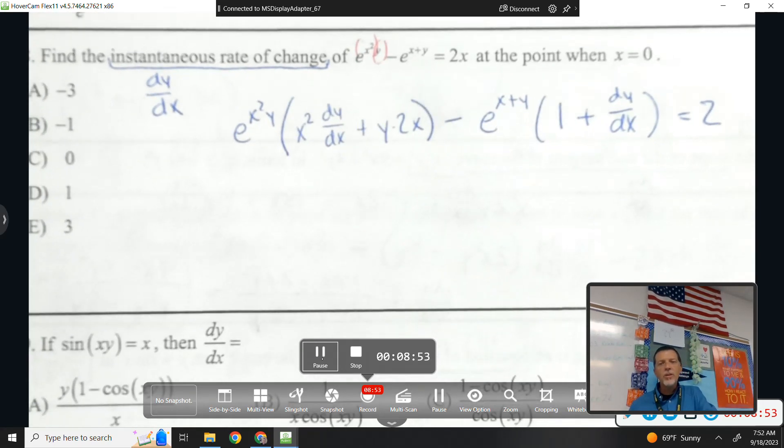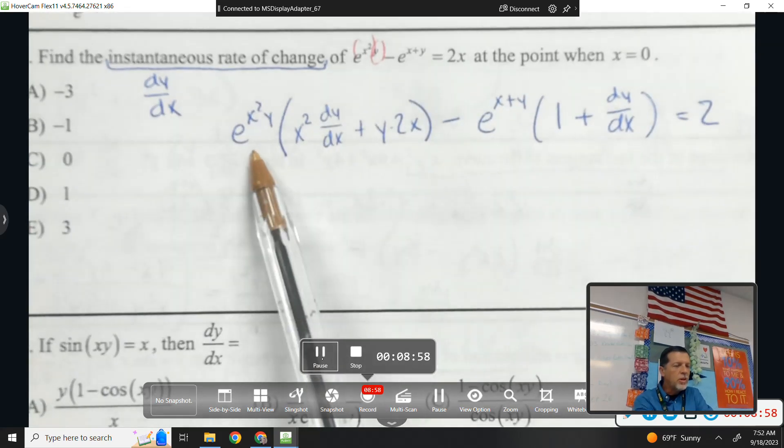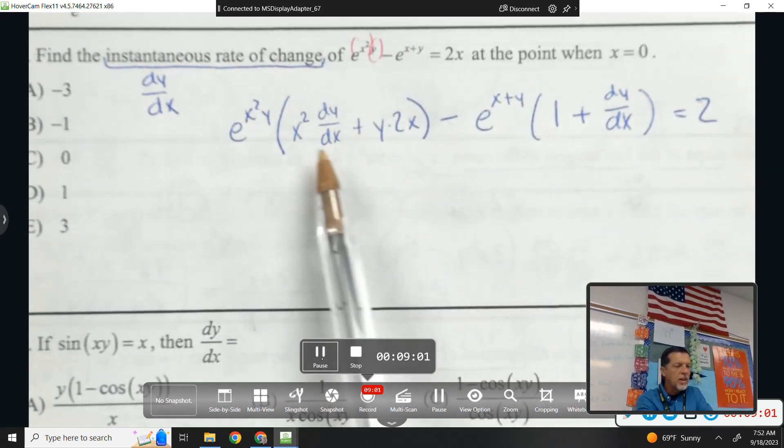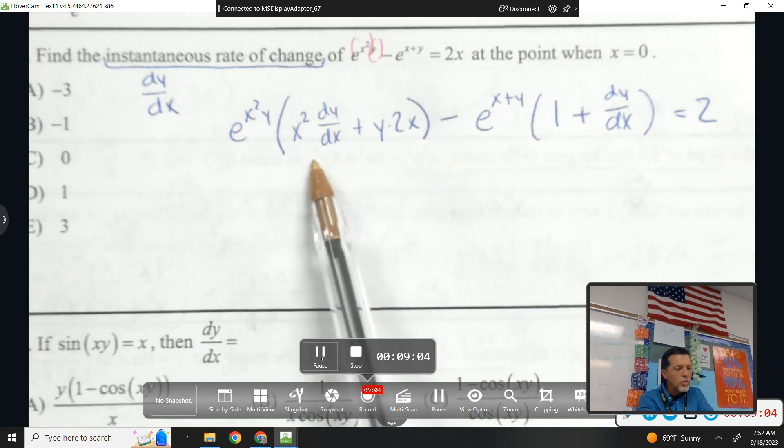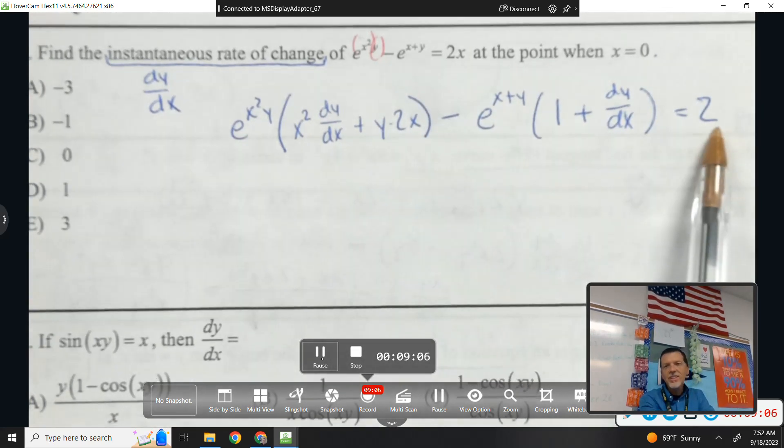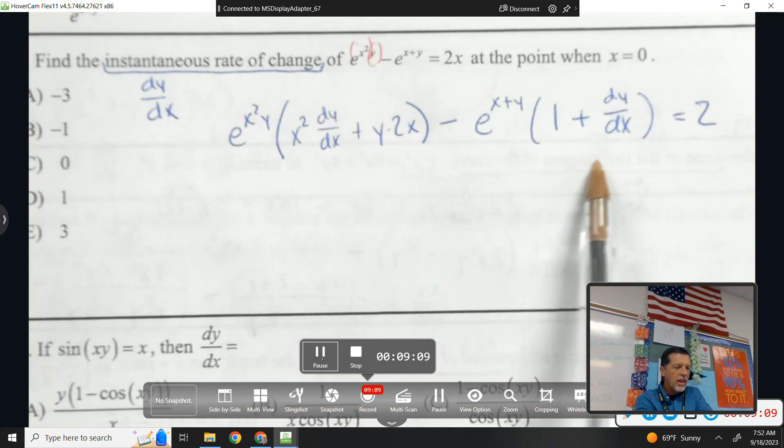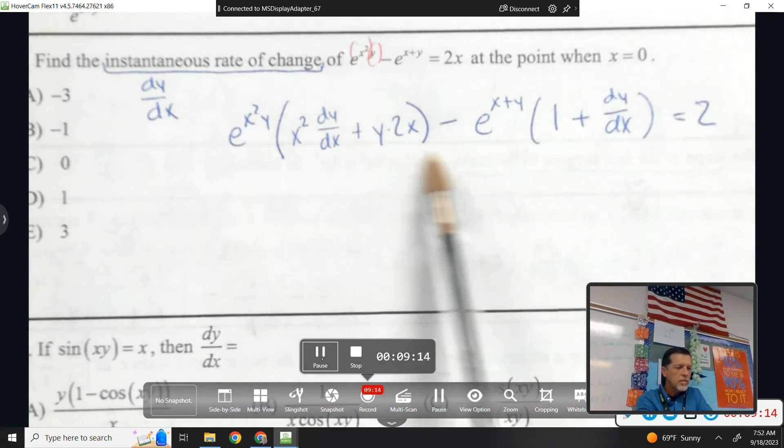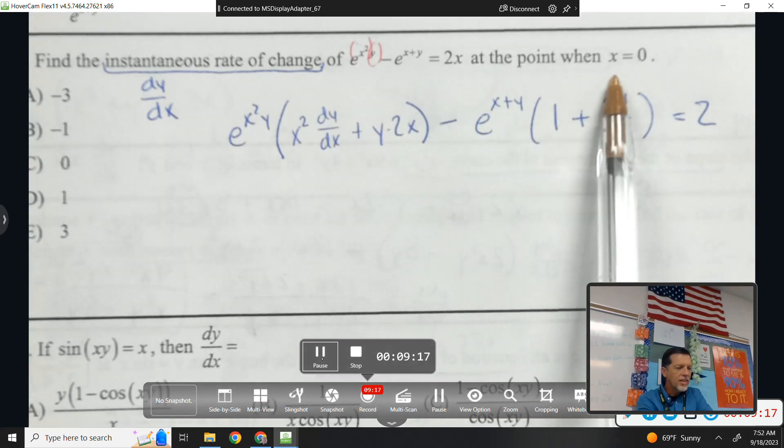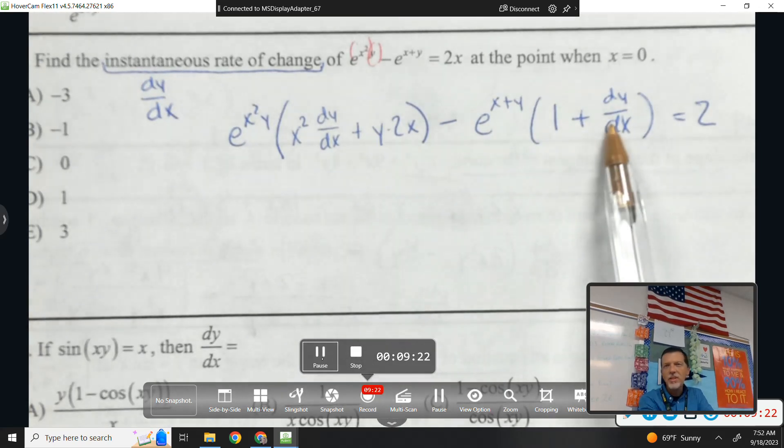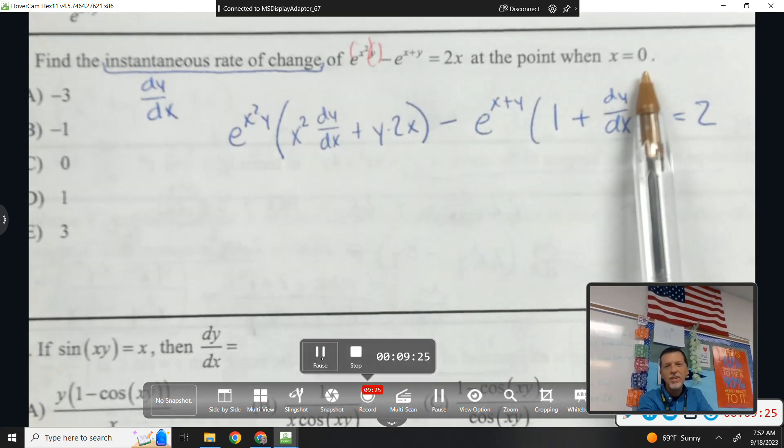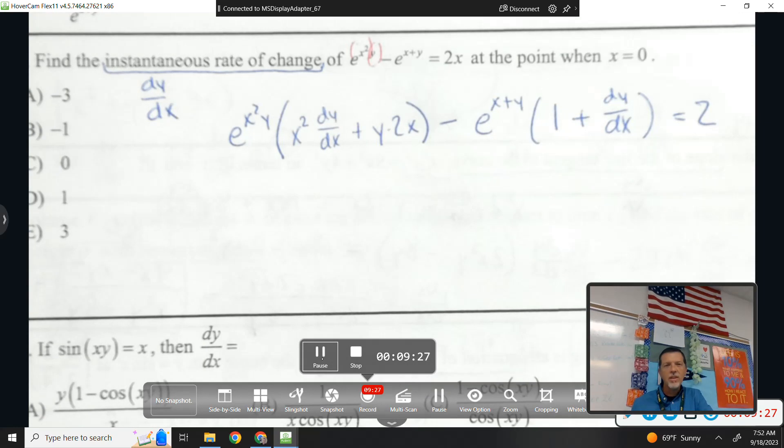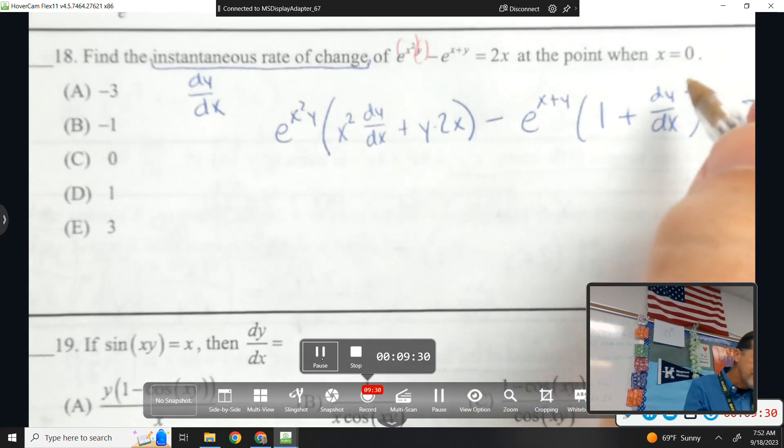So one of those where no single step is really all that hard. But there were two e to the x type problems. So two chain rule things. Within the chain rule was a product rule. So just lots of stuff going on. I'm trying to find dy/dx when x is zero. So I guess this is where algebra teachers probably solve for dy/dx. Math students probably just plug in x equals zero and see what happens.